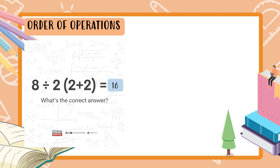There cannot be two correct answers to this problem — there is only one correct answer. To solve it correctly, we need to use what is called the order of operations. We follow the order of operations, which is more commonly known as GEMDAS.